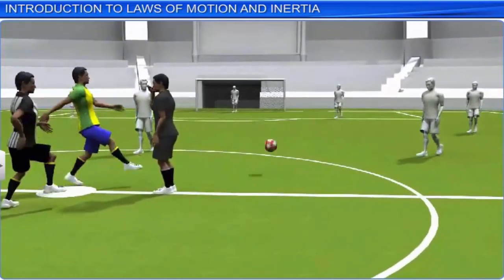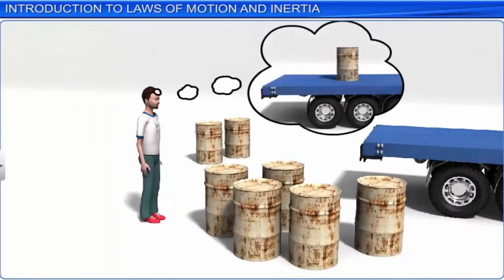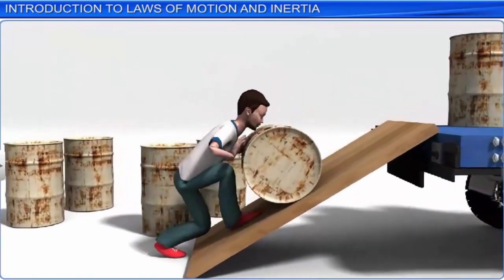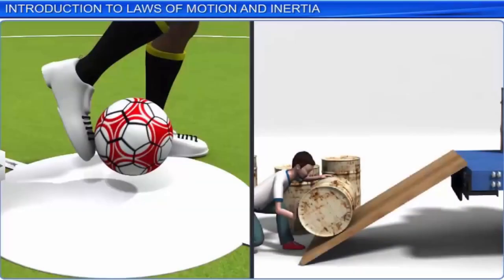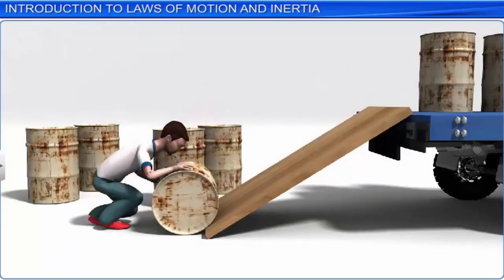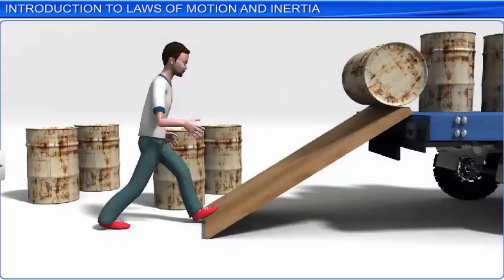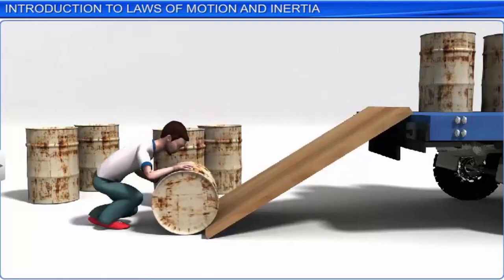The football would not move until a player kicks it. If you want to load a barrel onto a truck, will it go up just by itself? No — you have to either lift it or roll it onto the truck. In each of these cases, the body was at rest until an external force was applied to move it. Similarly, when a barrel is being unloaded from a truck using an inclined plane, it tends to roll down fast unless its motion is restricted by some opposing force. In this case, the barrel has a tendency to move faster but is being restricted by a force due to an external agency.